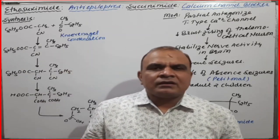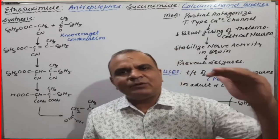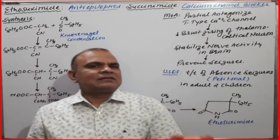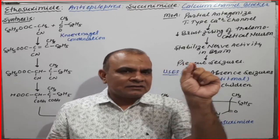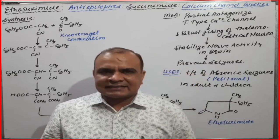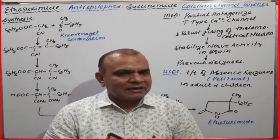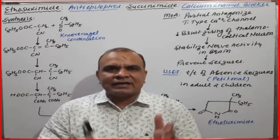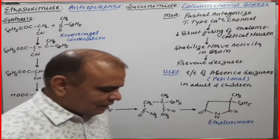Today we will discuss ethosuximide. Ethosuximide belongs to the anti-epileptic category — drugs which are used to treat epilepsy. Ethosuximide also belongs to a subcategory of anti-epileptics called succinamide. We will discuss the mechanism of action, usage, and the synthetic route for ethosuximide.